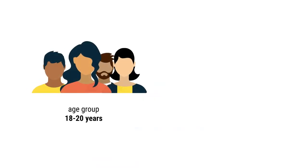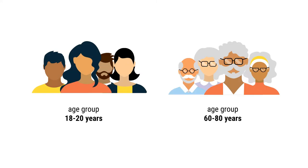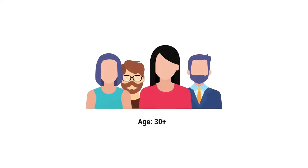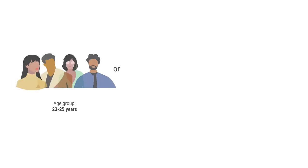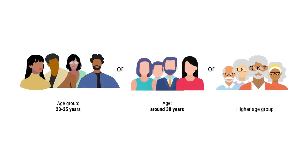Please note that the profile of the distance learners is completely different from the profile of the students you face in a classroom in a regular university or college. In open and distance learning, the first difference is the age group. Students may come from the age group of 18 to 20, or even from 60 to 80. But bulk of the students will be 30 plus, or between 23 to 25 or higher age group depending on whether it is a postgraduate or undergraduate program.